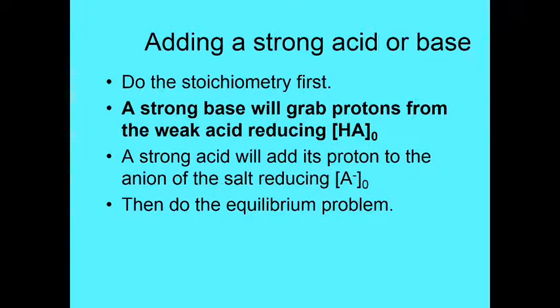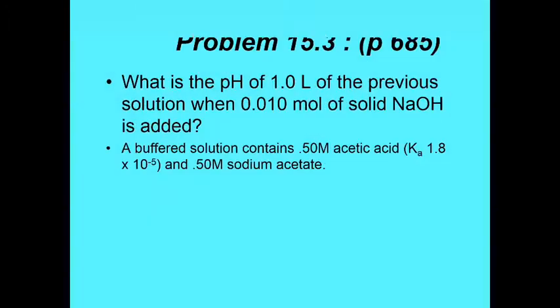All right, so adding a strong acid to a strong base, do the stoichiometry first. A strong base will grab the protons from the weak acid, reducing the HA concentration, or a strong acid will add the proton to the anion of the salt, reducing the A negative concentration. Either way, Le Chatelier's will come into play, and it's going to mess with your problem. And then once you've dealt with that, you do the equilibrium problem. So these are a little harder because they're basically two problems. The strong acid, strong base problem, and then the ice equilibrium problem.